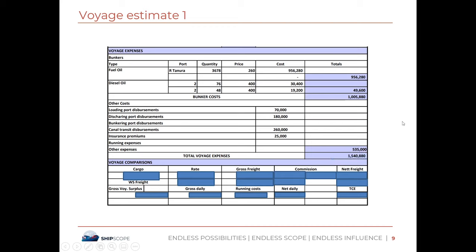Now for the voyage comparison. We are carrying 248,000 metric tons. The flat rate is $20.25 per metric ton. The vessel is fixed on WS 18, so multiplying 0.18 by $20.25 gives a rate of $16.20 per metric ton. Wait — WS 18 means 18% of flat rate — actually multiplying 0.18 by 20.25 gives $16.20 per metric ton. Multiplying this by 248,000 cargo gives the gross freight.